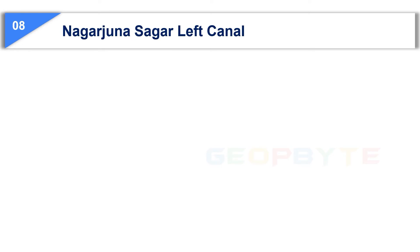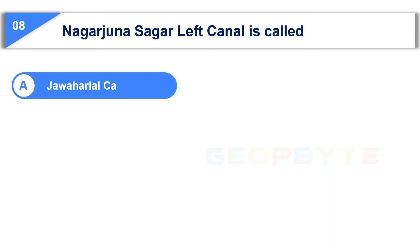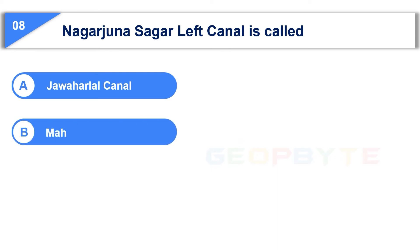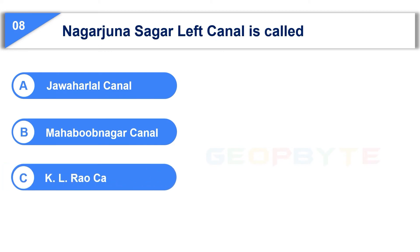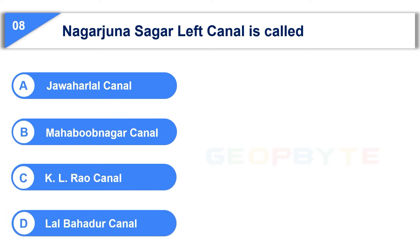The eighth question is: Nagarjuna Sagar Left Canal is called — Option A: Jawaharlal Canal, Option B: Mahbubnagar Canal, Option C: KL Rao Canal, Option D: Lal Bahadur Canal.